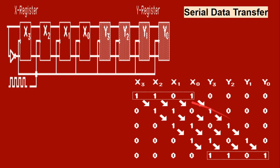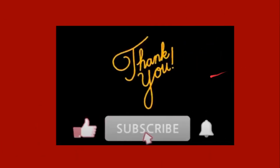Since we have four bits of data, four clock pulses are needed — for each clock pulse, one bit gets transferred to the corresponding register. After the first, second, third, and fourth shifts, all the data is transferred from register A (X register) to register B (Y register), i.e., from the input register to the output register. These arrows show the flow of data as the clock pulses tick. For parallel data transfer, the clock pulse is given simultaneously so all four bits transfer to register Y at the same time. This is how shift registers work.